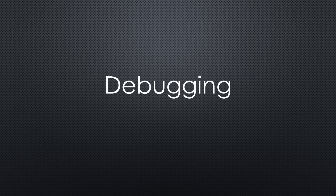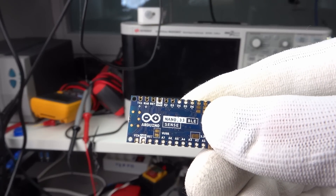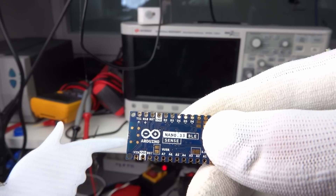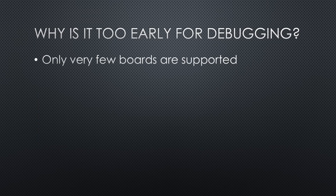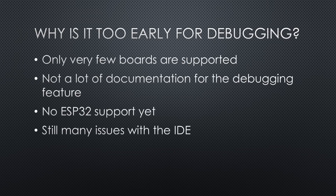For several reasons, it is too early for me to talk about the debugging feature. Only very few boards are supported — for example, the Nano BLE. Unfortunately, this board has no SWD pins to connect to the debugger; you have to solder wires to test pins, which is not very professional. Not a lot of documentation for the debugging feature exists, and there is no ESP32 support. Arduino said they would not provide this support and leave it to the community. Given the many issues and the current state of development, I do not feel it would be a good usage of my time to try to use the debugger.